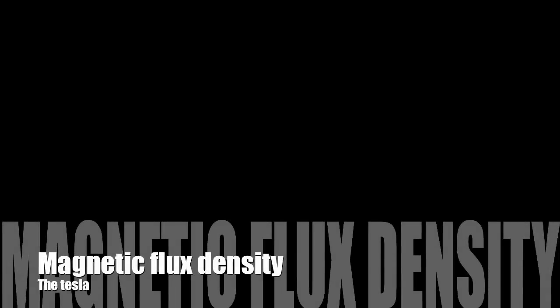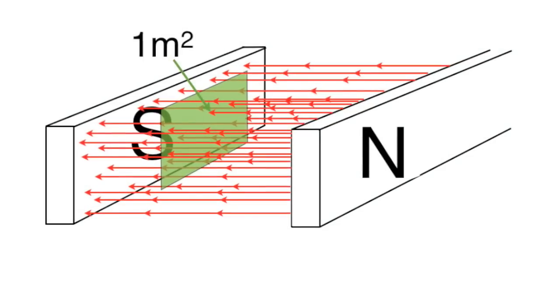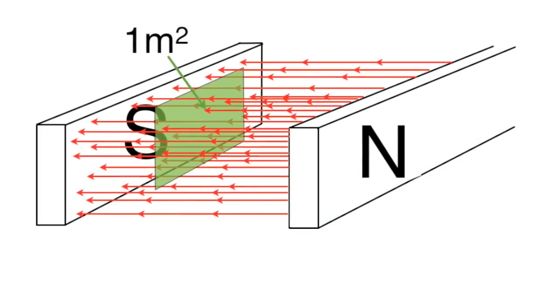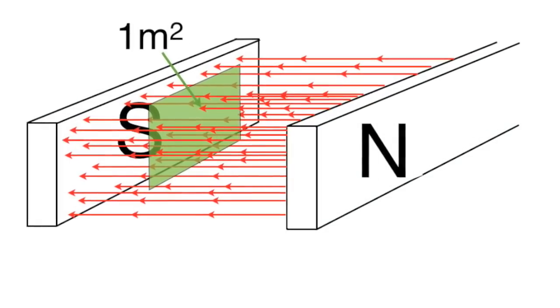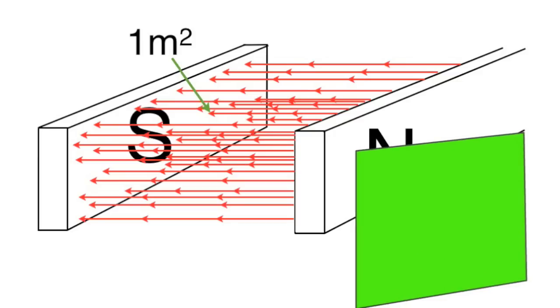Next, flux density. If we imagine a sheet of area one square meter perpendicular to the magnetic field, so that the lines of the magnetic flux cut through it, and then we take that sheet and turn it round and look at the flux cutting through.